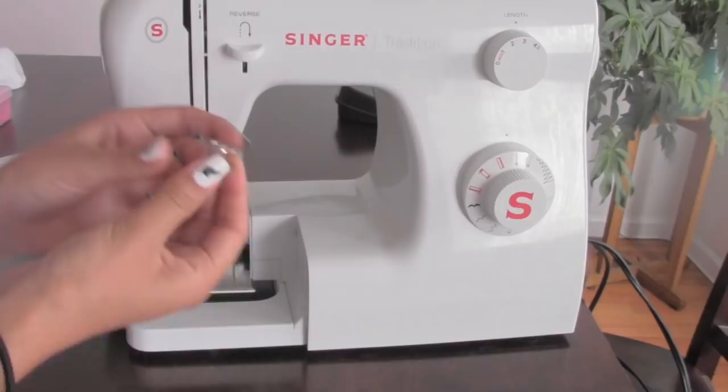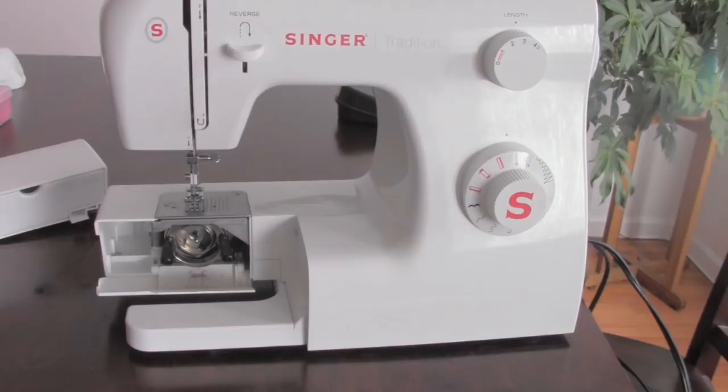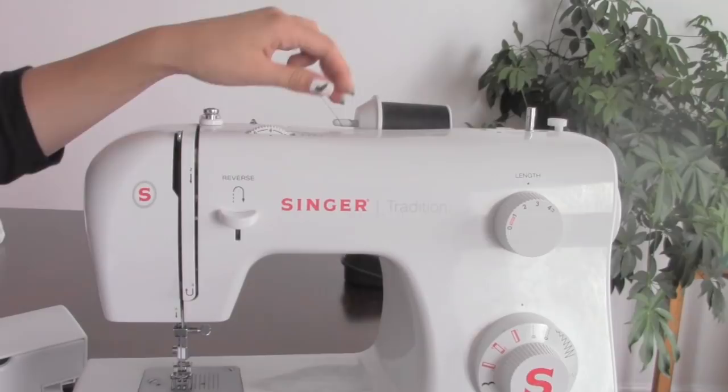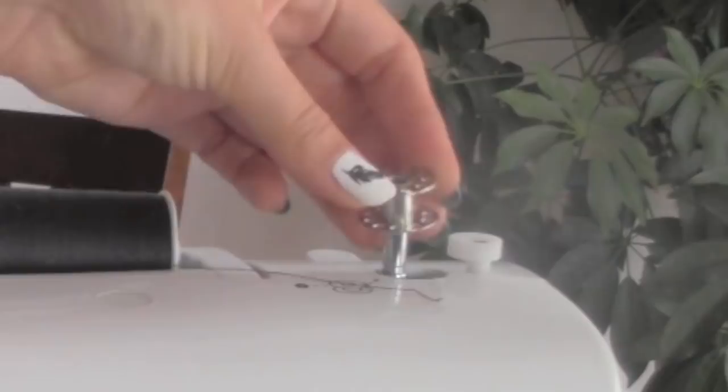Take this bobbin. It usually comes with your sewing machine so you should have one. If you don't, you can find it at the craft store. Next, get your thread and put it on the thread holder and you're going to pull some out.